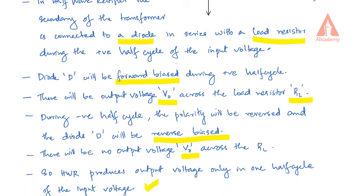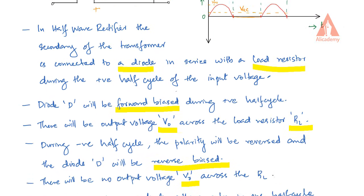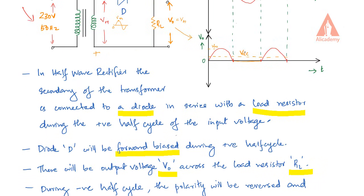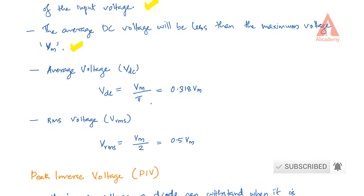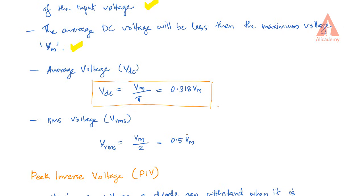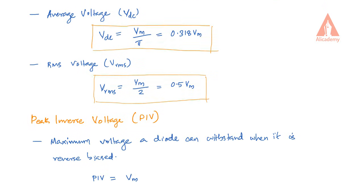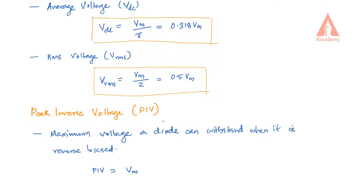The average voltage, that is Vdc, is equal to Vm divided by pi, which is equal to 0.318 Vm. The RMS voltage is equal to Vm divided by 2, which is equal to 0.5 Vm.